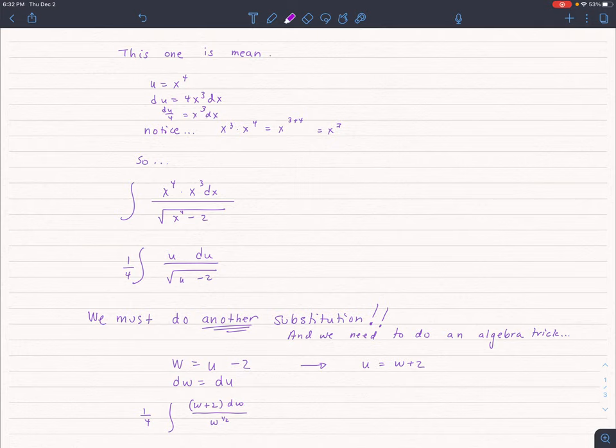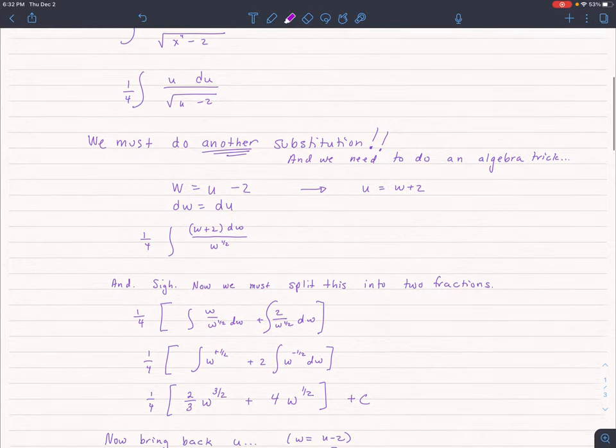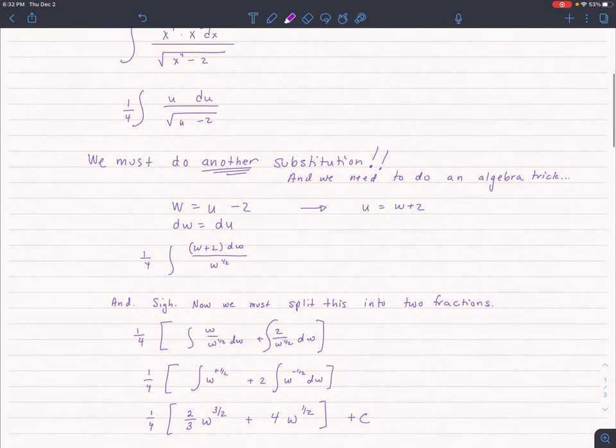What do I have to do now? More algebra. I have to split this into, yes, two separate fractions. So when I split that fraction into two fractions, I get these integrals, I simplify, I rewrite the exponent of the denominator as a negative exponent.